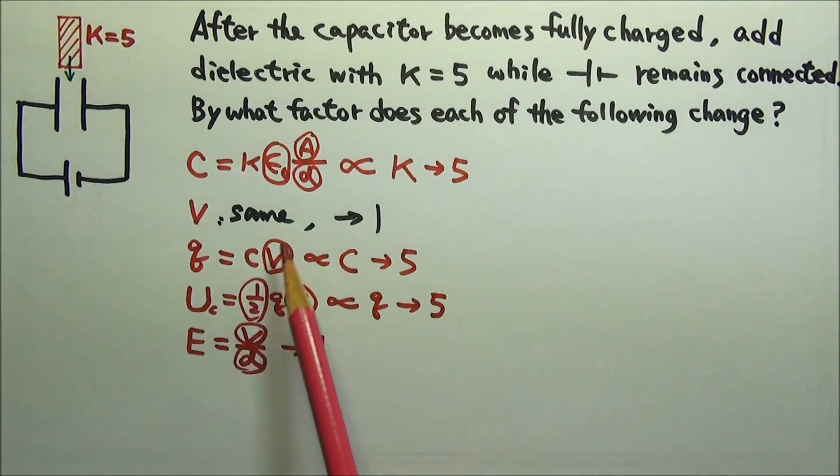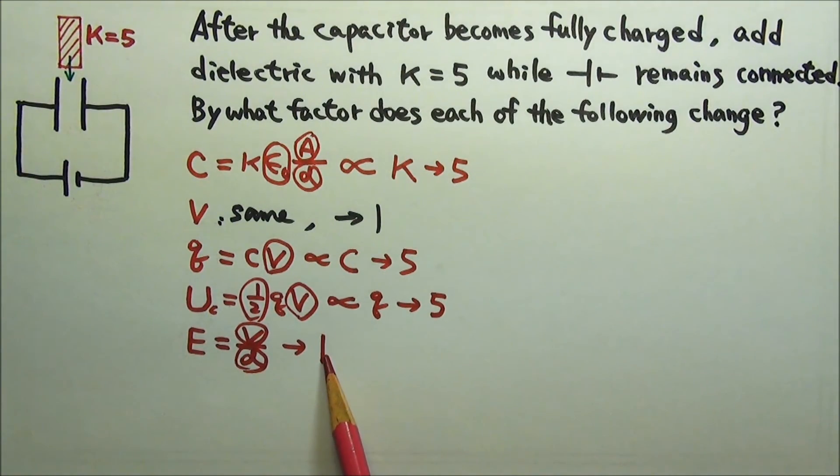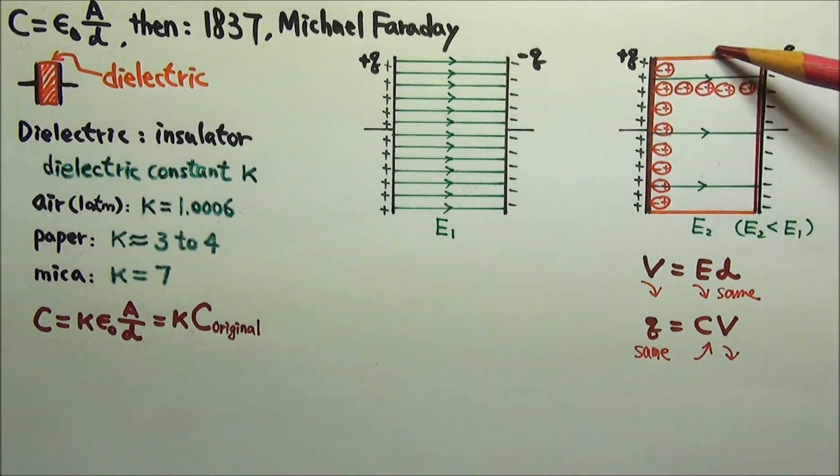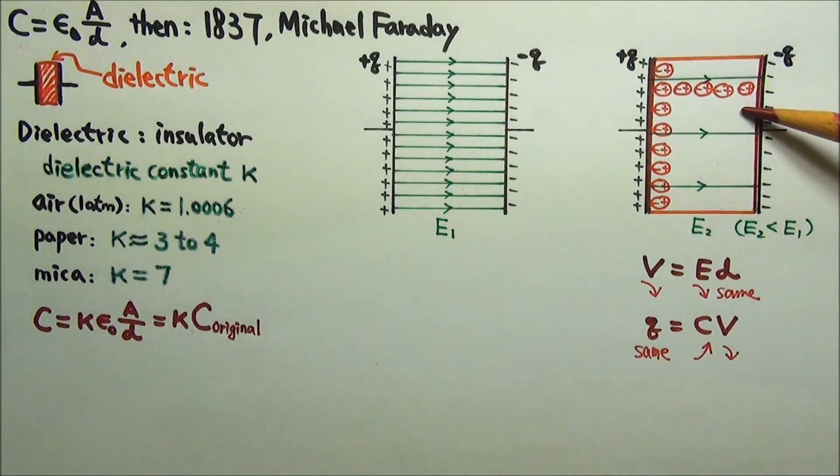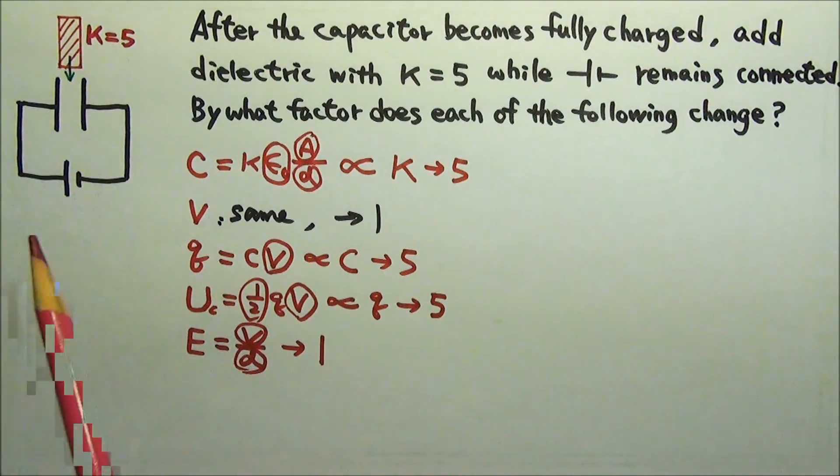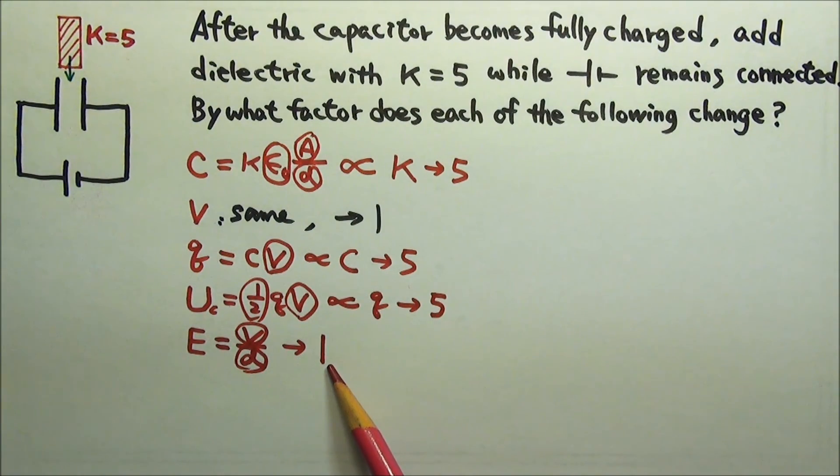This means to maintain constant voltage, the electric field has to stay the same. Since the polarized molecules inside the dielectric material weaken the electric field, the battery has to pump more charges onto the plates in order to have the same electric field between the plates as before.